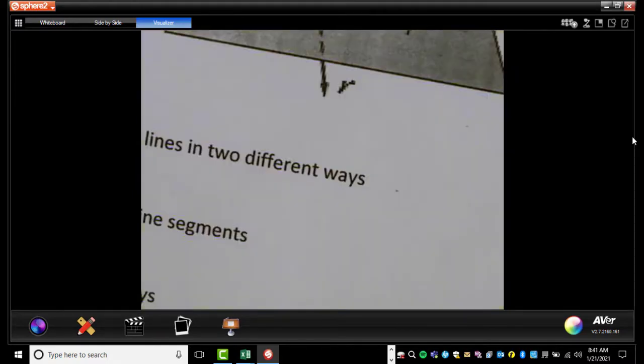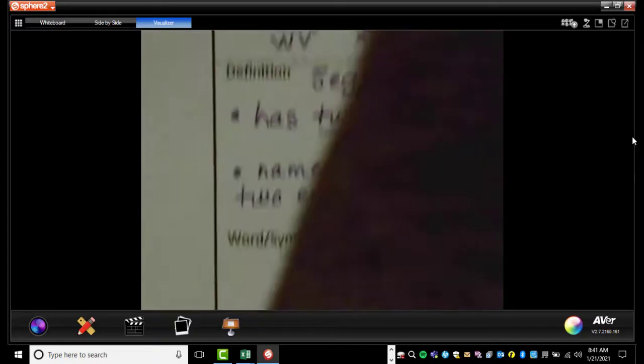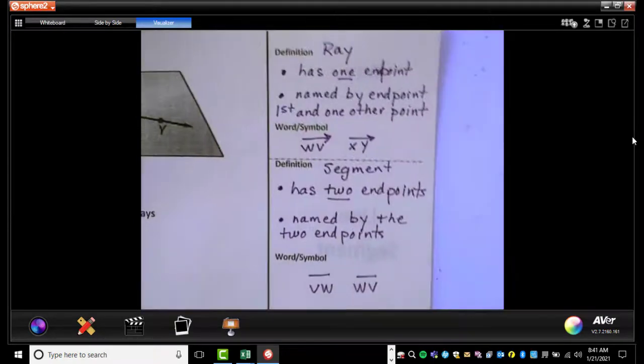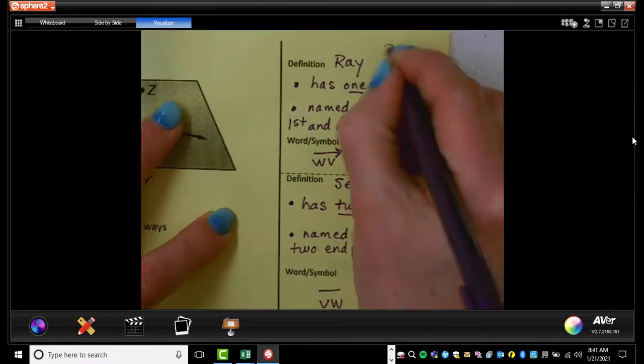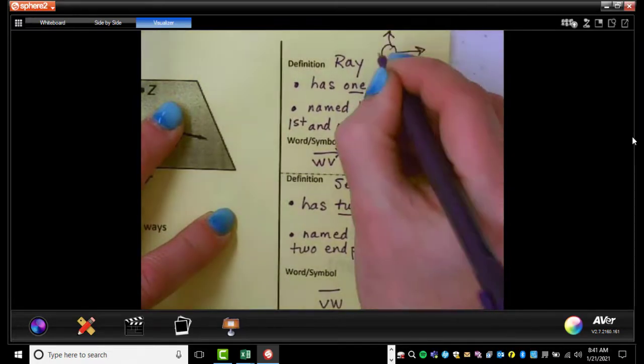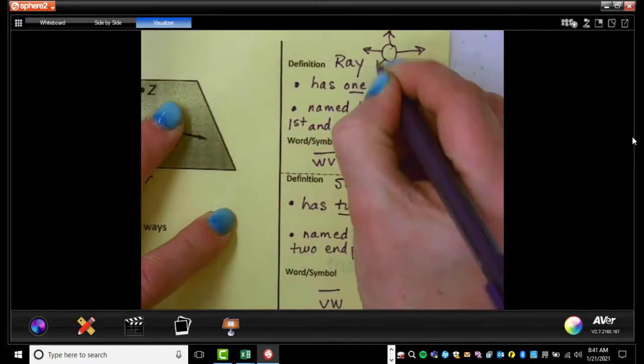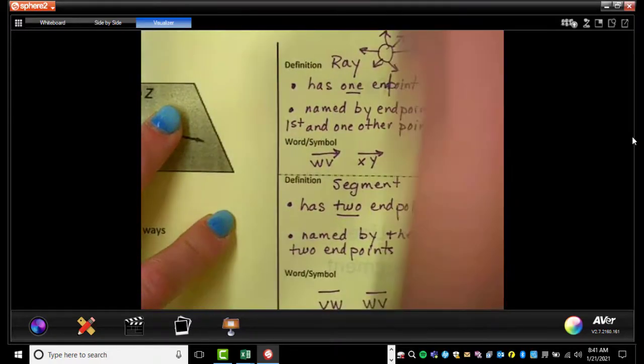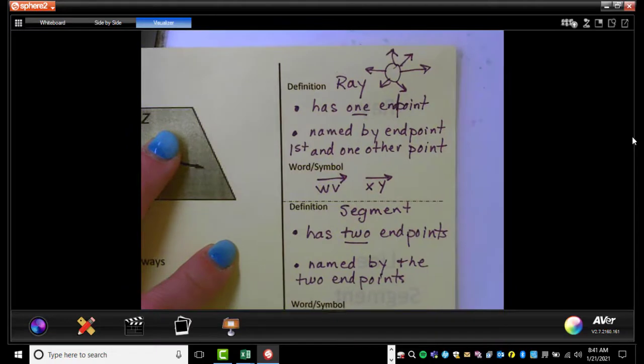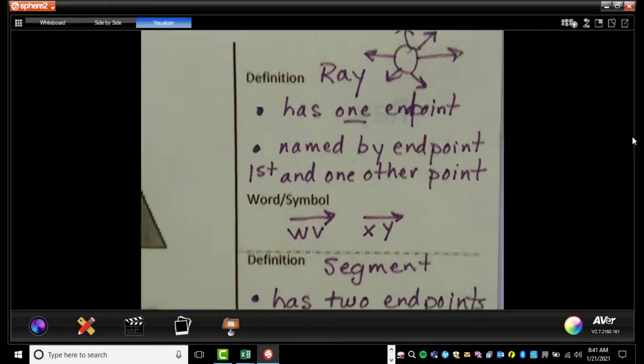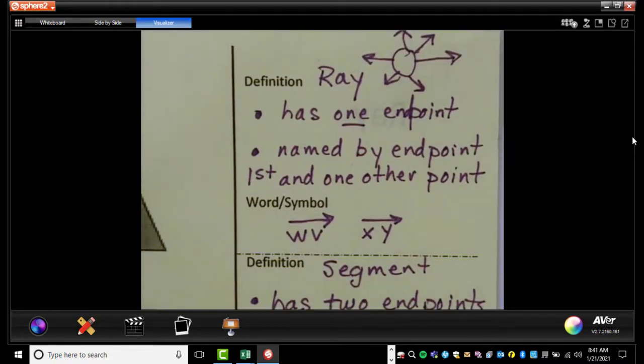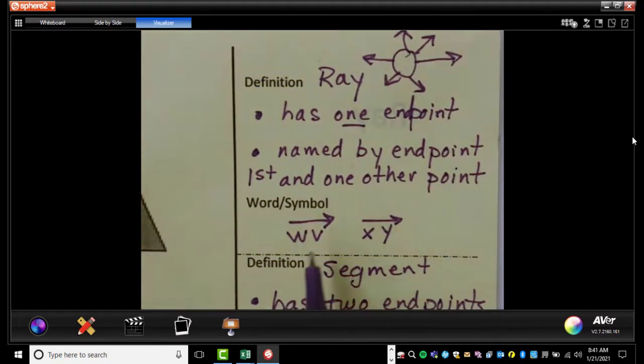Okay. We're going to go to the right-hand side and talk about a few other terms here. All right. A ray. One thing I remember with a ray is like a ray of sunshine. And so that may help you remember. So kind of like a sunshine is a ray. It has one. Let me zoom in here real quick. It has one end point. It is named by the end point first, and then one other point that happens to be on that ray. So, for example, now notice there's just one arrow. For example,